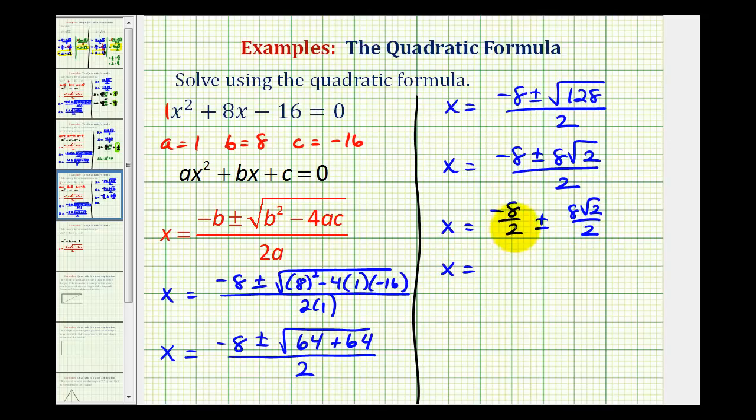So we have negative 8 divided by 2 is negative 4. And here we have 8 divided by 2. That would be plus or minus 4 square root 2.